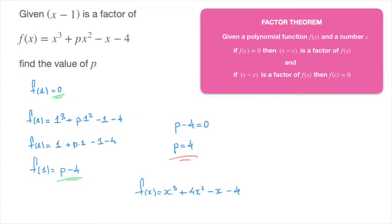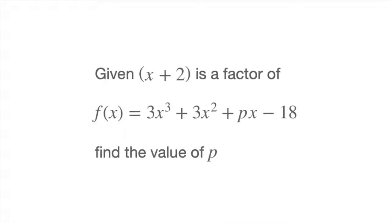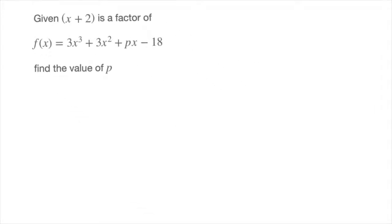Let's look at the next example. In this example, we're told that x plus 2 is a factor of the polynomial f of x, which equals 3x cubed plus 3x squared plus px minus 18. Once more, we're asked to find the value of p, where p is the x to the power of 1 coefficient. I'll move the question to the side, and now we can get started.